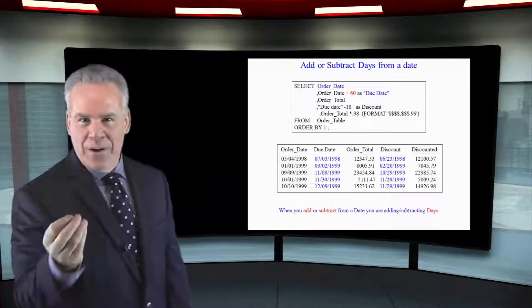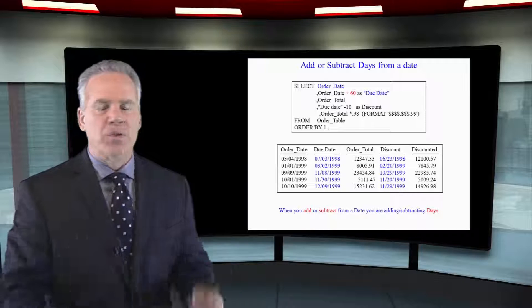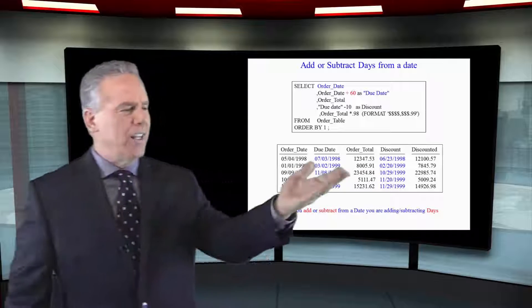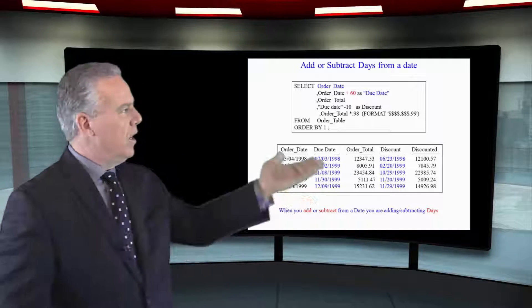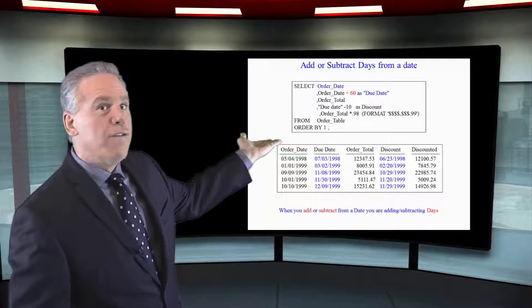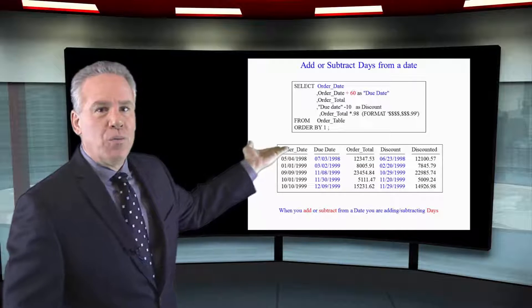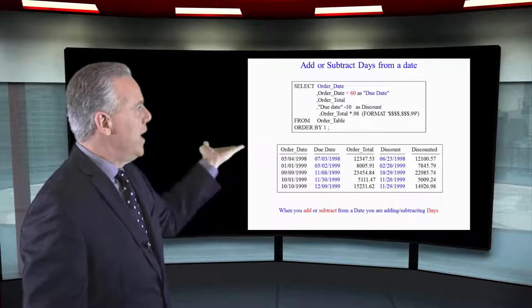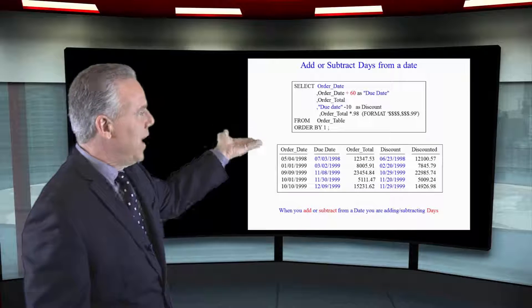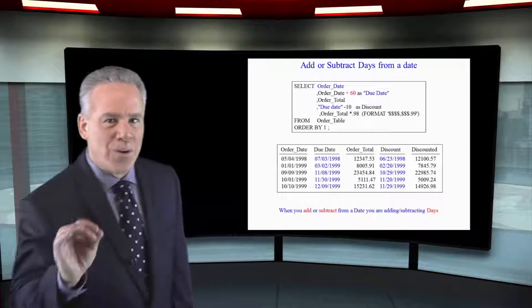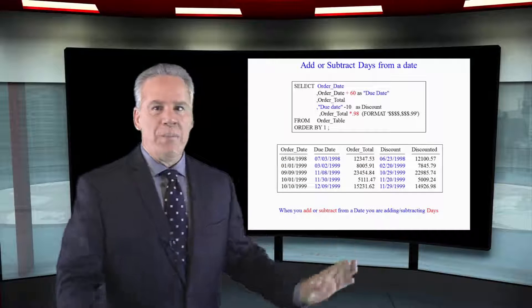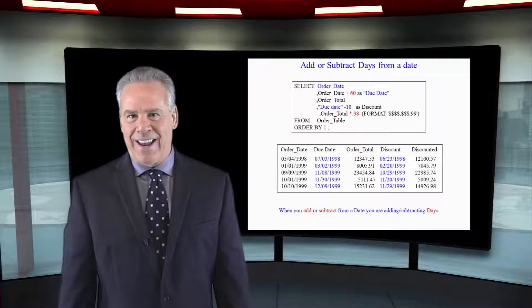But one thing Teradata does that, for example, SQL Server would not allow, is that you can reuse that alias. In the fourth column here, we say listen, if you pay within 50 days we'll give you a 2% discount. So it's due date, which was really order date plus 60, so it's due date minus 10, or order date plus 50, and then you can see we'll give them a 2% discount.